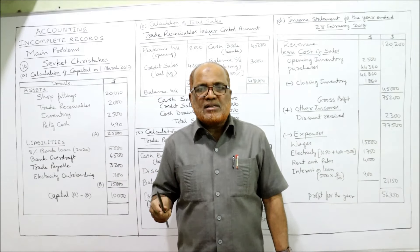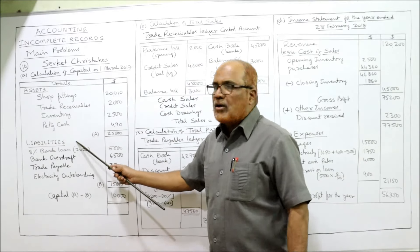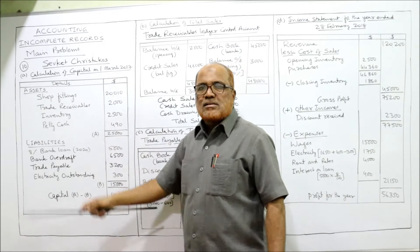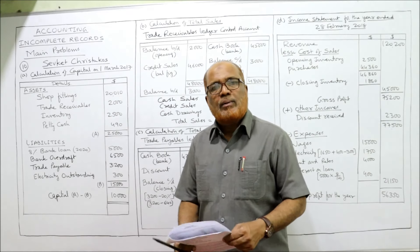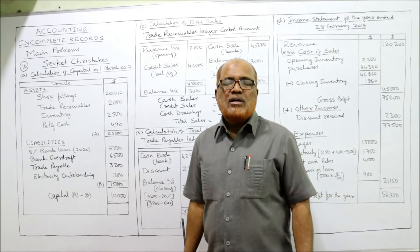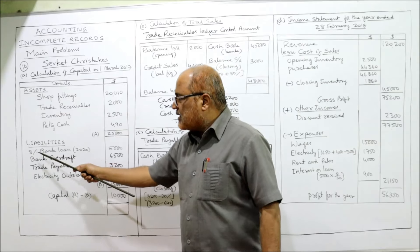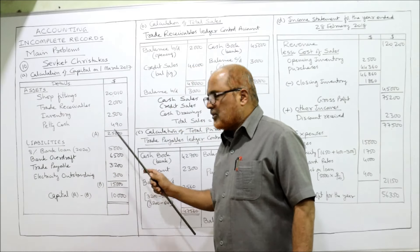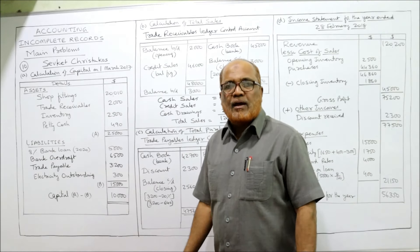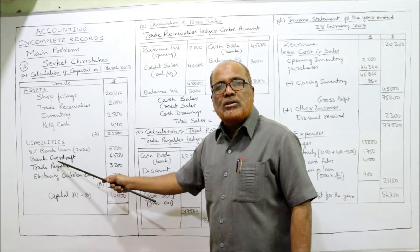Capital means assets minus liabilities. We take the total of assets minus total of liabilities to get the capital. Now identifying each item: 8% bank loan — when a business takes a loan it's a liability, so Bank Loan 2020 $5,000 goes to liabilities. Bank overdraft is a temporary loan from bank, so it is also a liability.